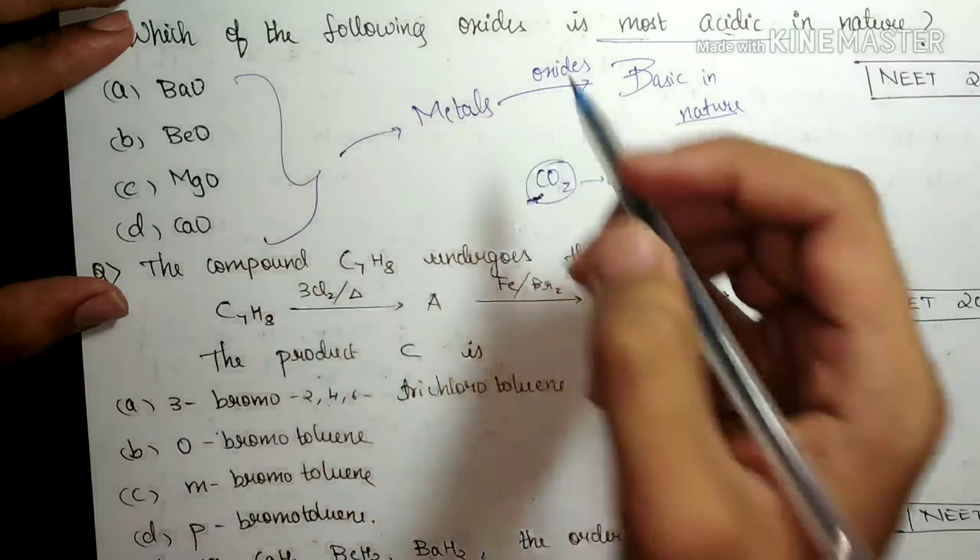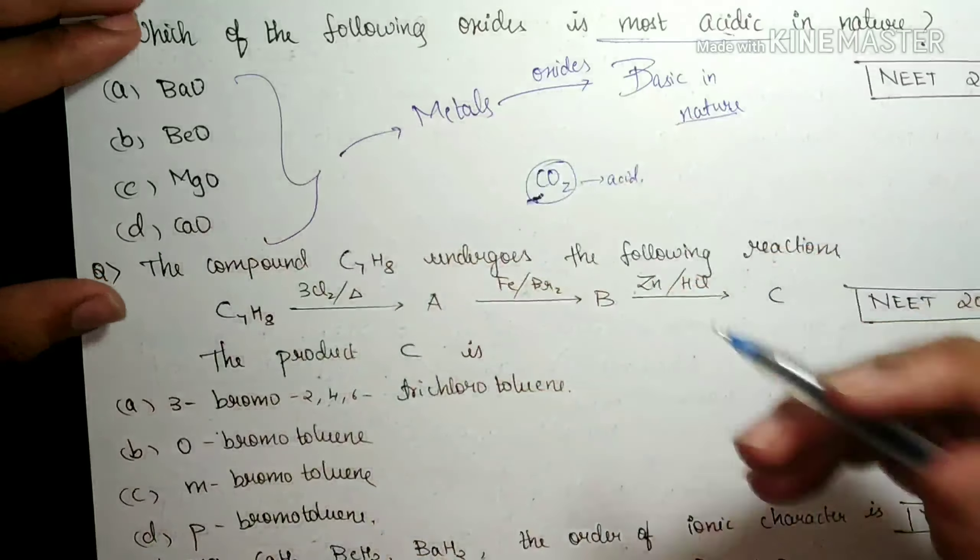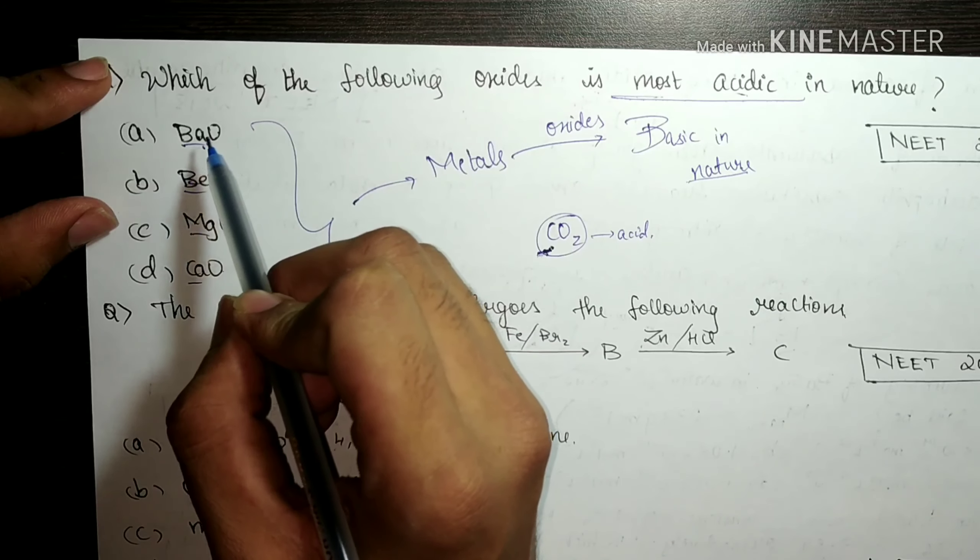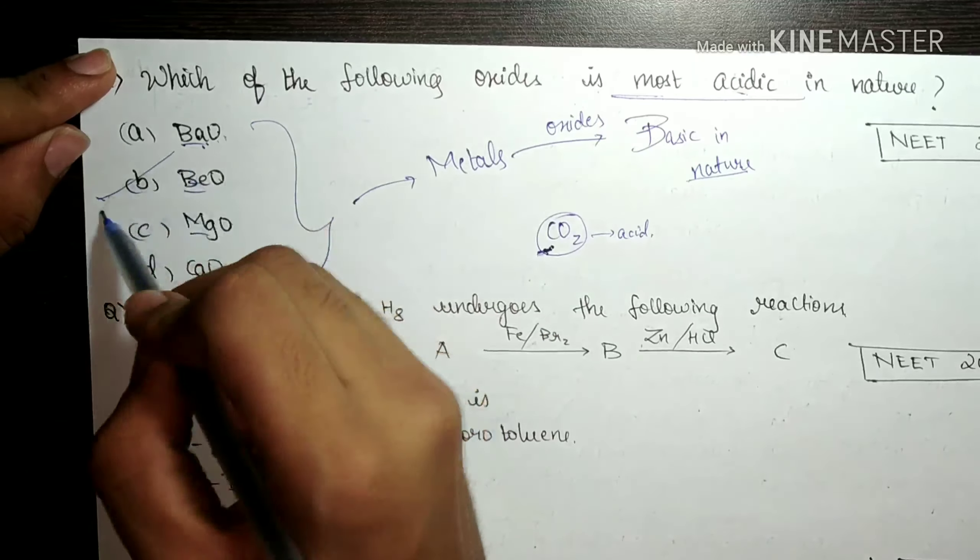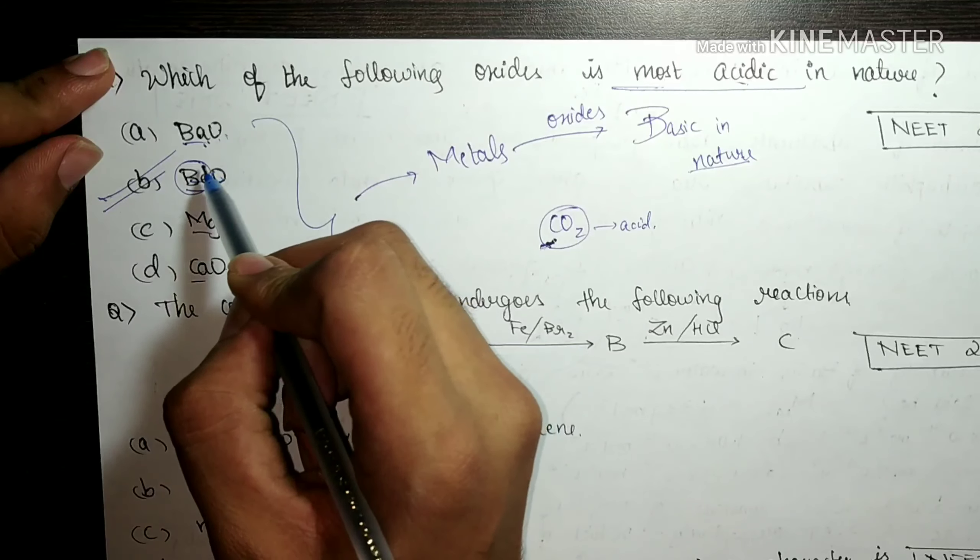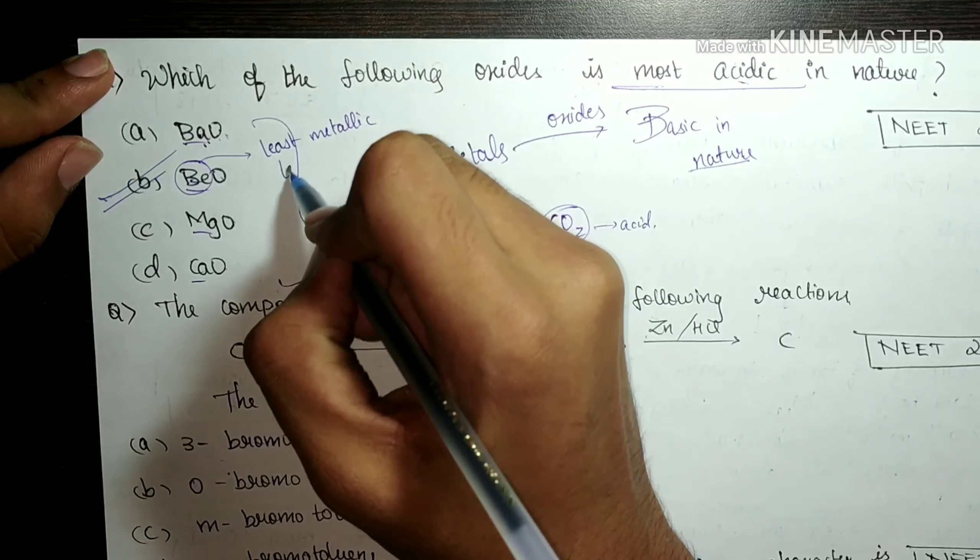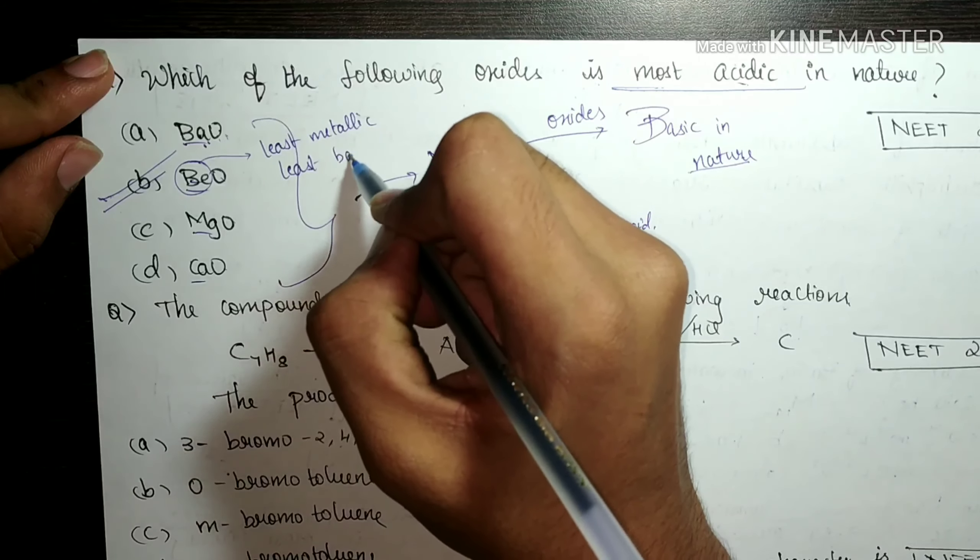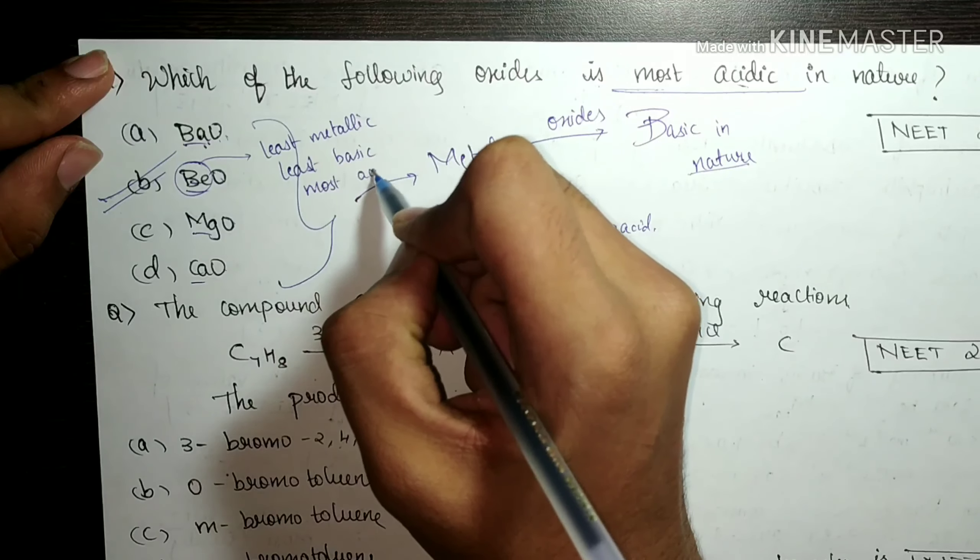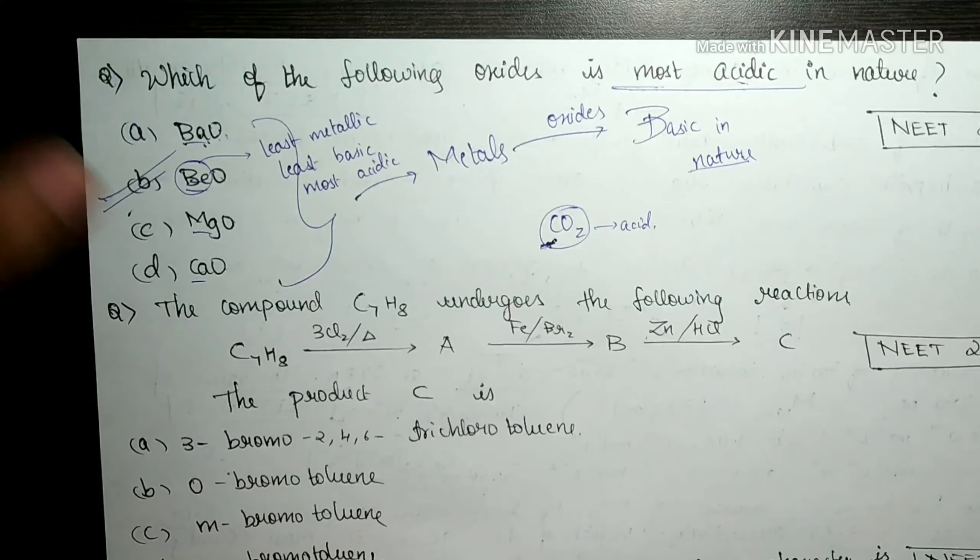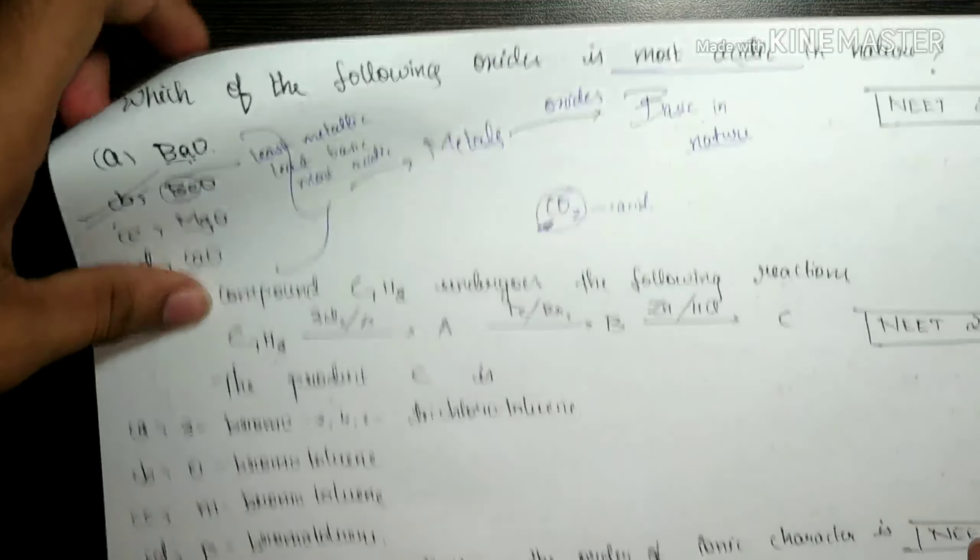We have to check the metallic character. If the elements, the metals used, if they are more metallic, then it becomes more basic also. So the most basic in this case is barium, because it is lowest in the group. So this is the least acidic. And BeO, in this, beryllium is least metallic. So least basic, most acidic obviously. So option B will be our correct answer. I hope you got the logic what we have done.